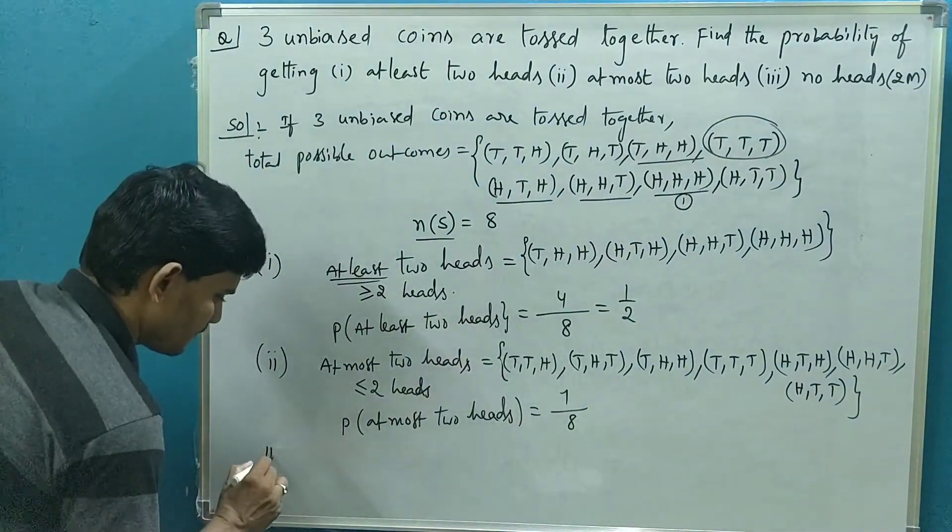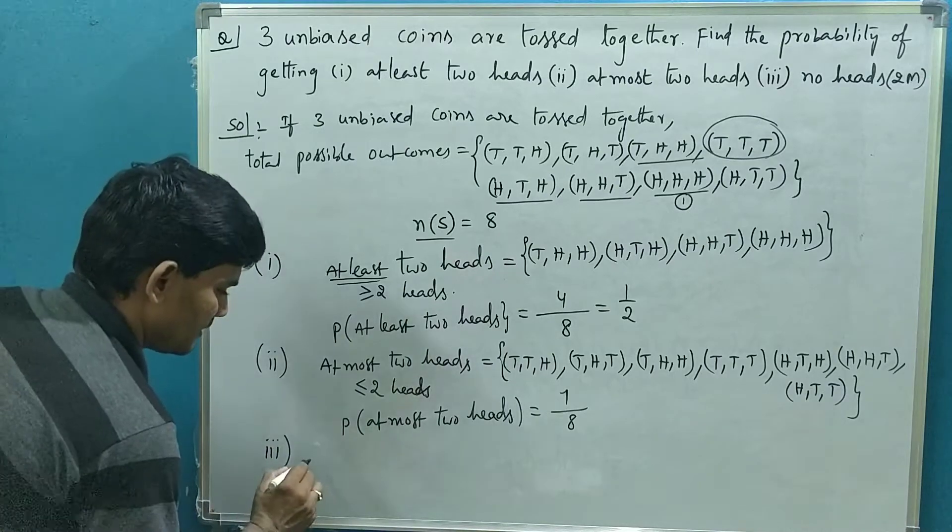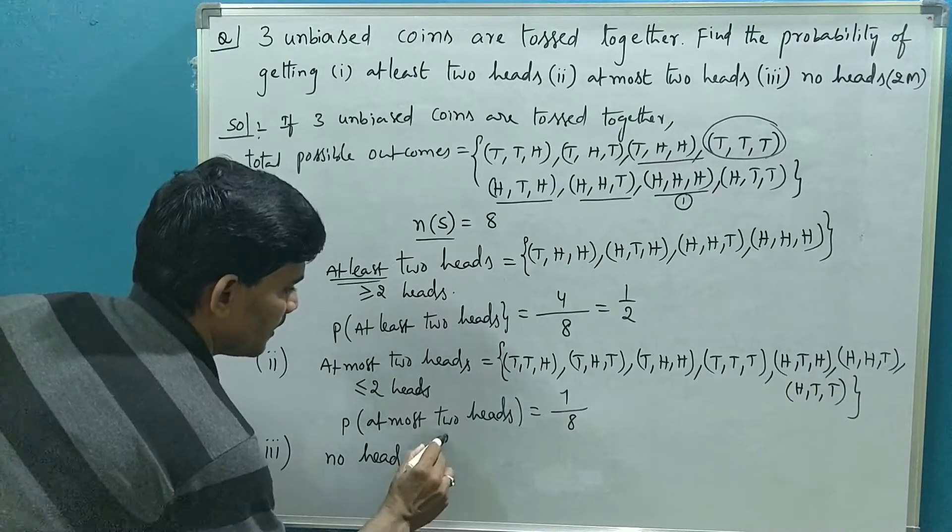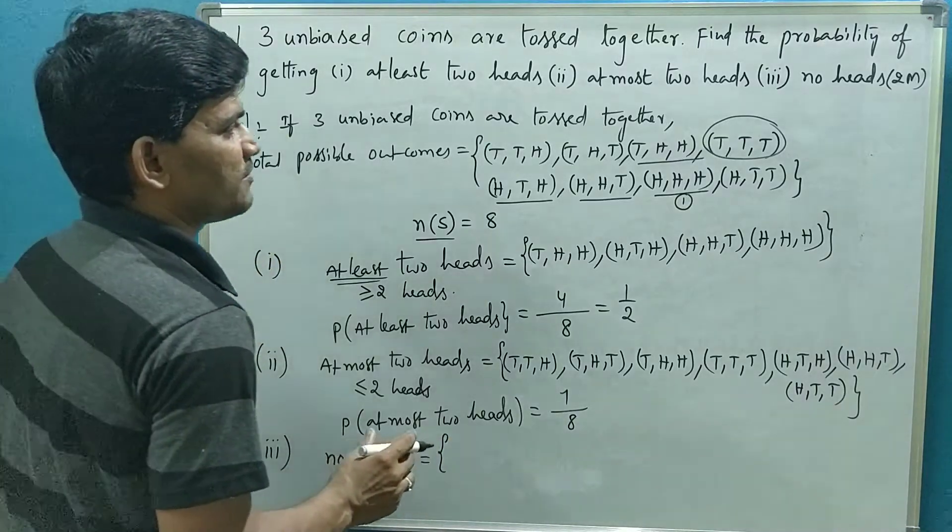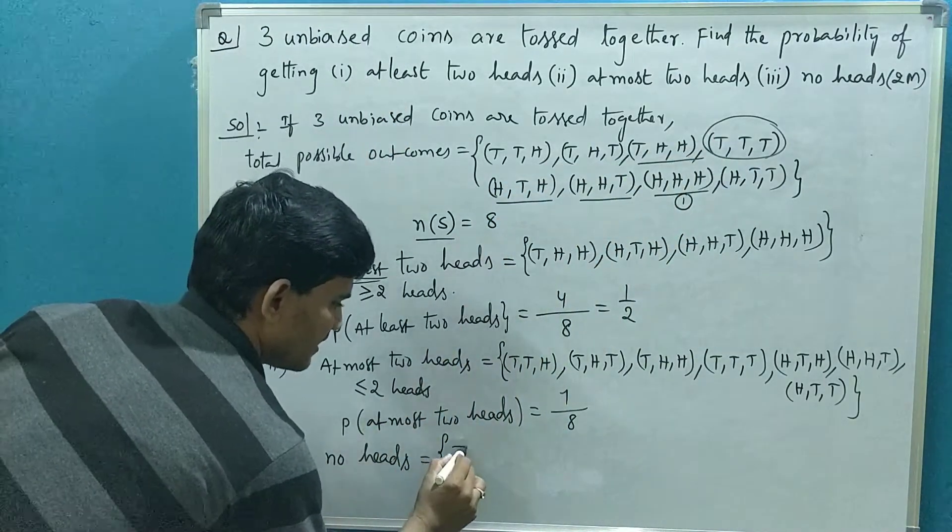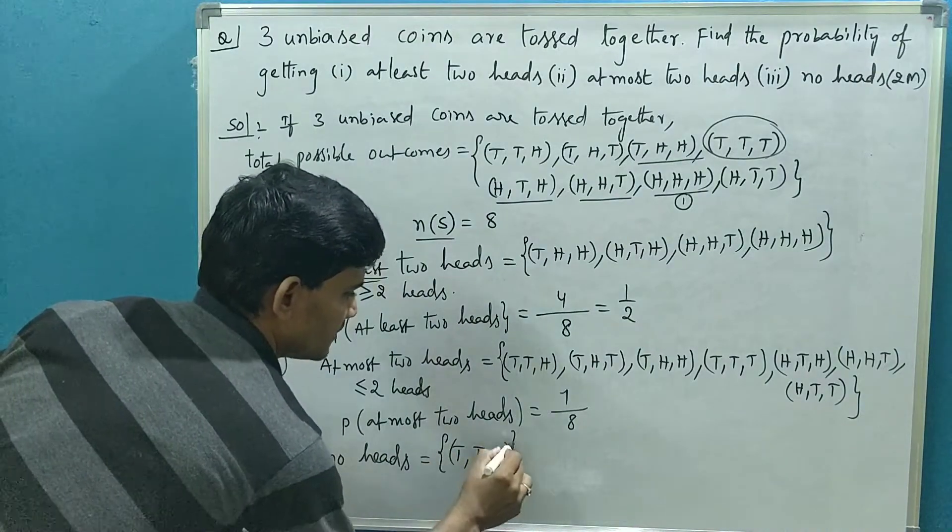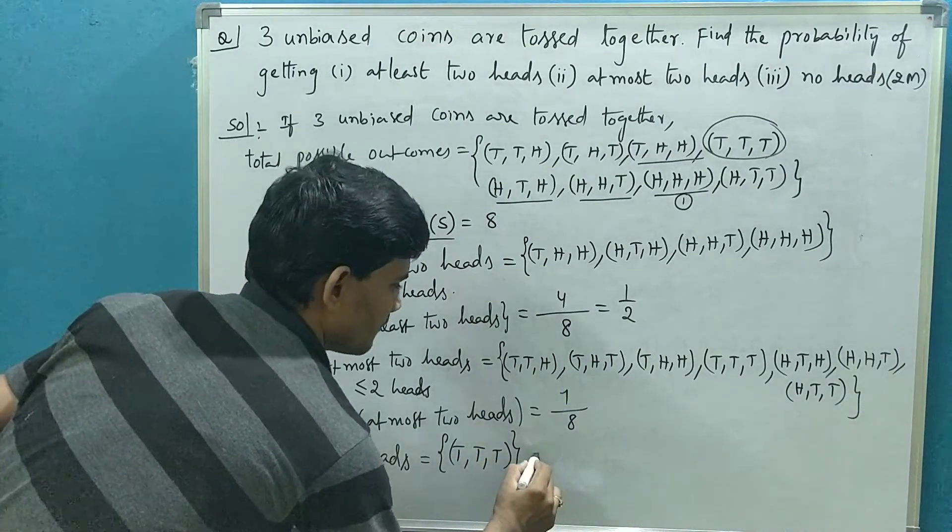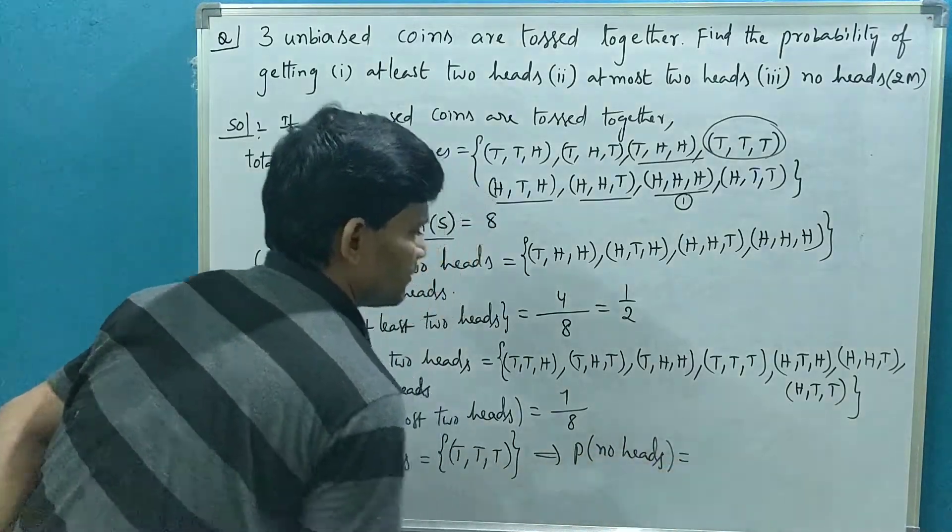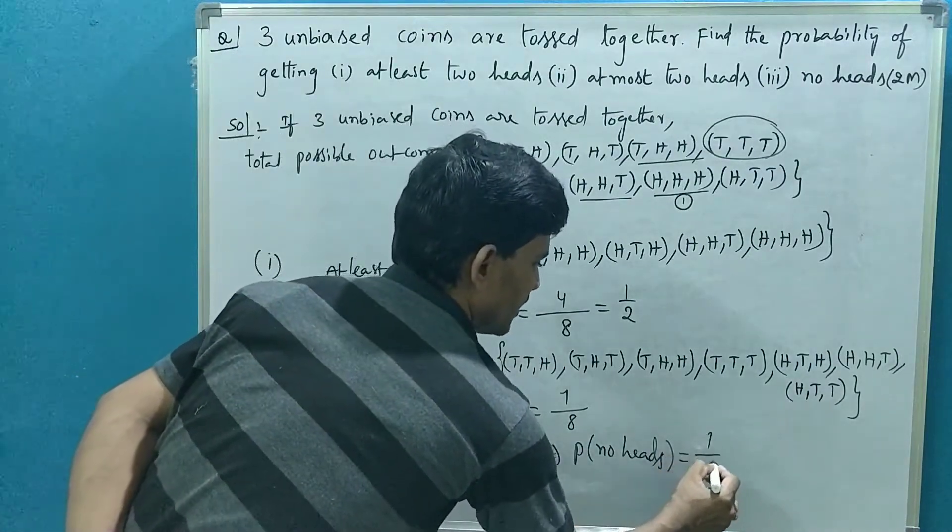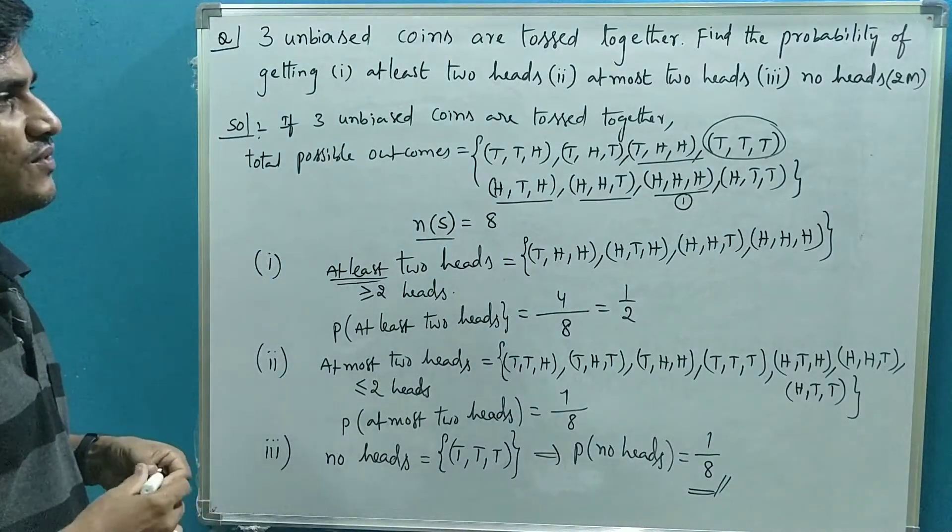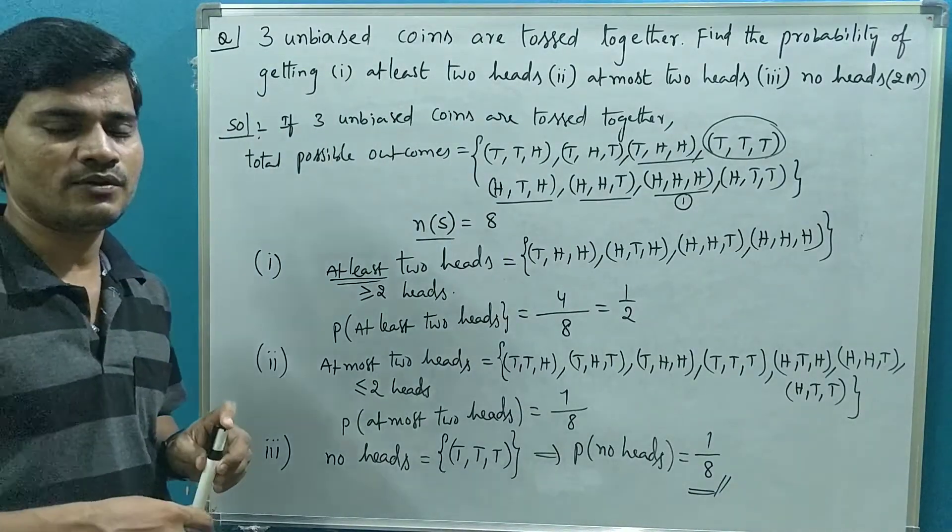Let us go for the third one, that is no heads. This is the only outcome which does not contain heads: TTT. Which implies probability of no heads equals one out of eight. So this is how we write the probabilities of required events. Thank you, I hope you understand.